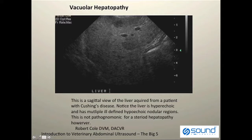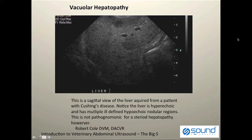The overall size of the liver is also enlarged, as indicated by the rounded borders. Normally the liver should have nice sharp or tapering borders. This is an example of canine Cushing's disease.